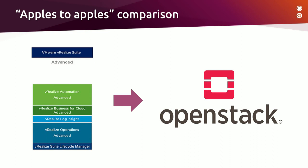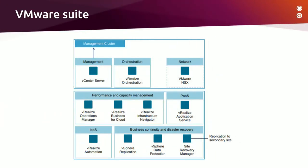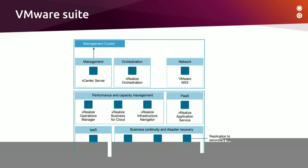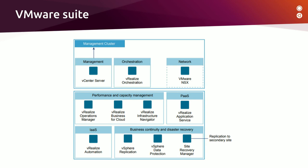For the purposes of today, we are going to focus on the advanced offering of VMware vRealize Suite, because it most closely resembles what Charmed OpenStack provides today, allowing us to make an apples-to-apples comparison. When we take a look at the VMware Suite components, at the top are components responsible for hypervisor and SDN management, vRealize orchestration, plus VMware NSX SDN itself. In the middle are components responsible for performance and capacity management, including vRealize Operations Manager, vRealize Business for Cloud, and vRealize Infrastructure Navigator.